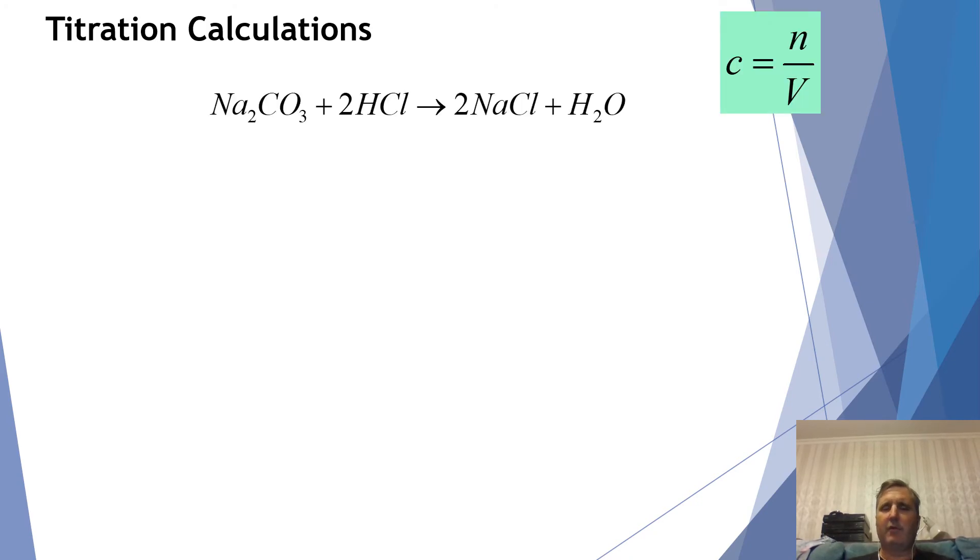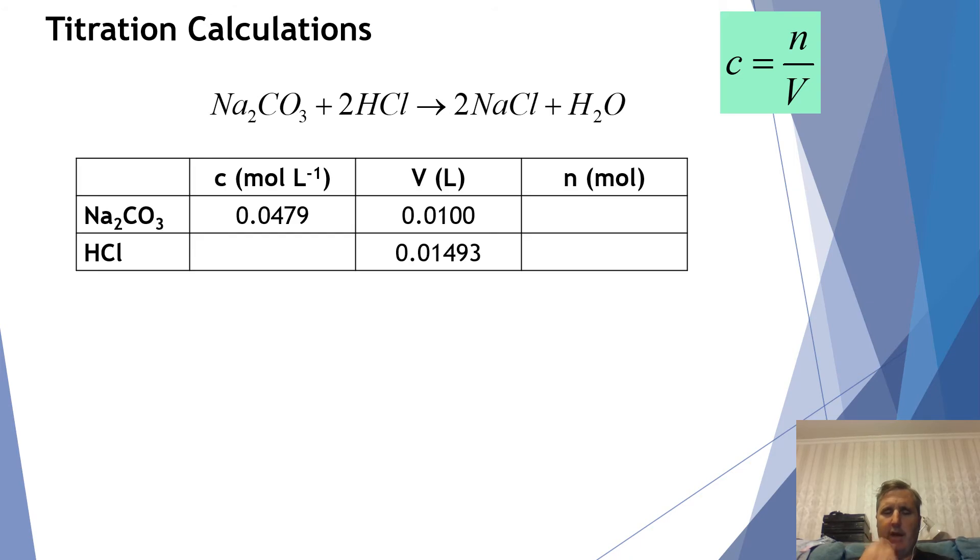Okay, so I now have this titration value. I can grab my results from earlier and so the sodium carbonate that I put into my conical flask, I pipetted in 10 milliliters, that's 0.0100 liters. I had earlier calculated its concentration was 0.0479 moles per liter. So this top line here of sodium carbonate is my standard solution, it's a solution I know the specific concentration of and I added a volume of it into my conical flask.